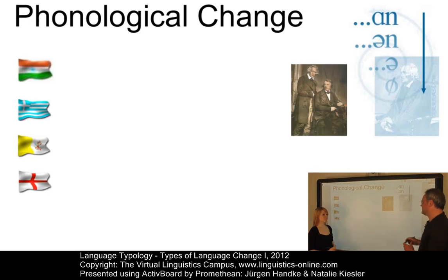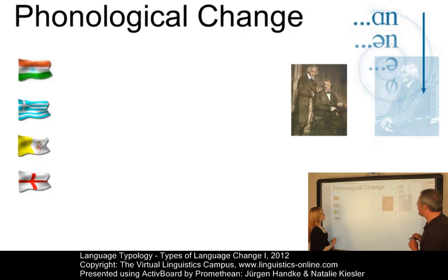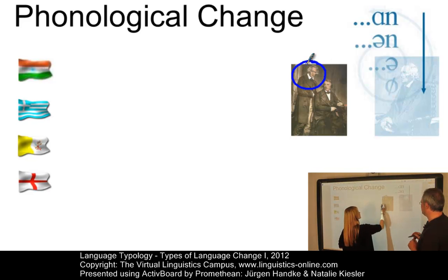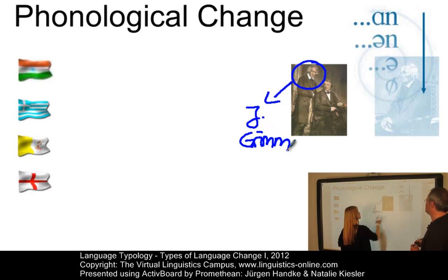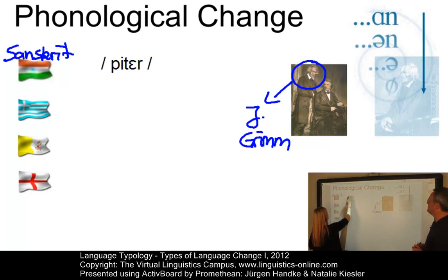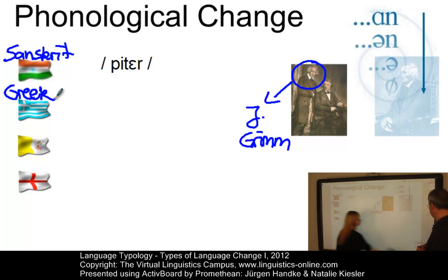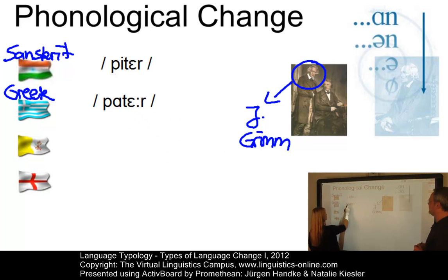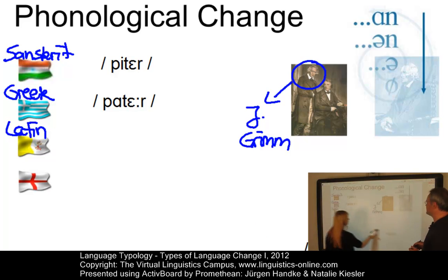In comparative philology, the earliest days of the predecessor of linguistics, people like Jacob Grimm discovered that cognates — that is related words across the languages of the world — are similar somehow. For example, in Sanskrit, one of the classical languages, the word for father is 'piter'. The same word, father, in classical Greek was 'pater', and in Latin — a language which some of you might speak or have learned at school — it was also 'pater'.